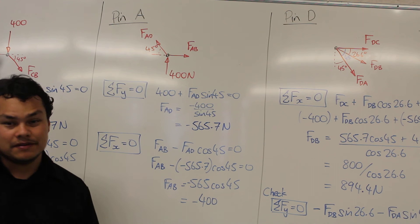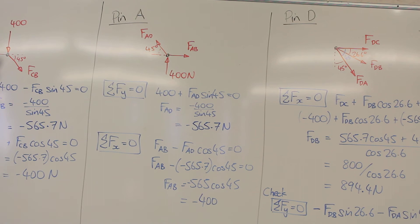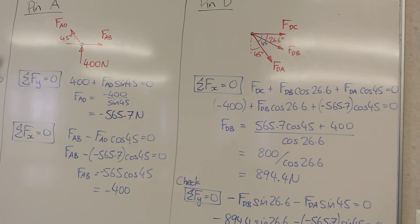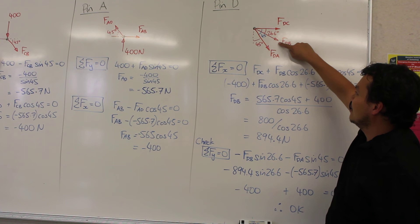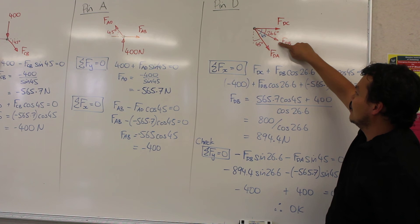Okay, so the next part will change a little bit. So now you should be able to see our calculations for pin number D. For pin number D, we've got Fdc going to the right, Fdb going down on an angle, and Fda going down on an angle of 45 degrees.